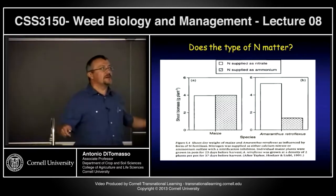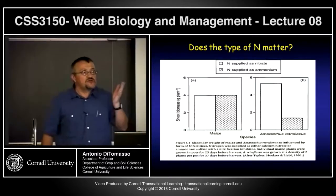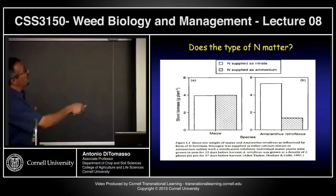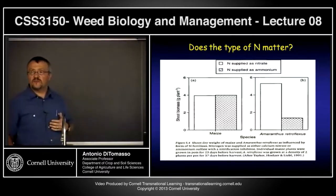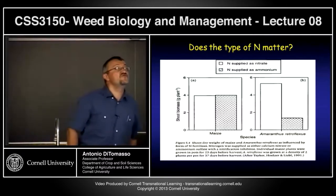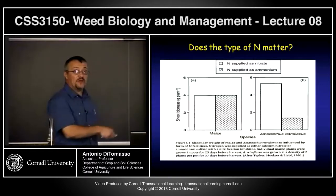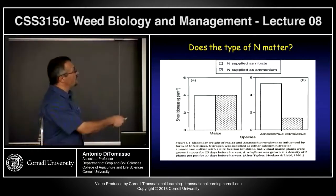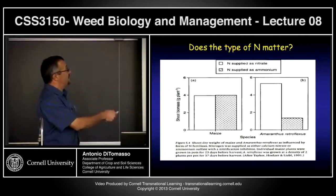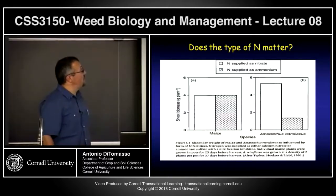Does it matter what type of nitrogen you use — nitrate versus ammonium? Do weeds differentiate? Here's one example using red root pigweed and maize looking at shoot biomass supplied as nitrate (NO₃) versus ammonium. For corn, it doesn't matter — it can handle both. But look at the weeds: supply it as nitrate and pigweeds go crazy; they can really take it up. Pigweed was not as good at picking up ammonium. So if you're fertilizing and have pigweed present, the better way to go may be to supply nitrogen as ammonium.